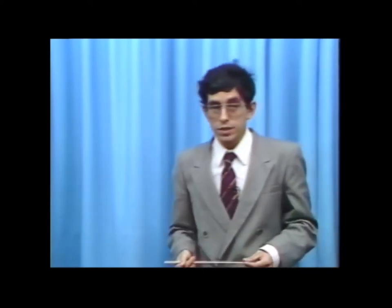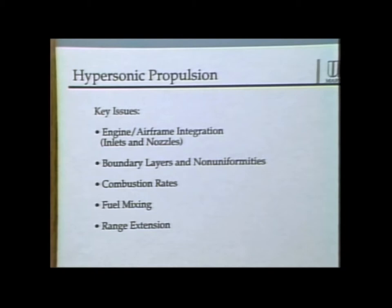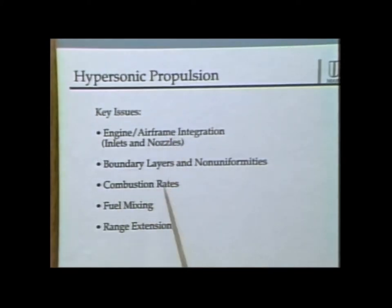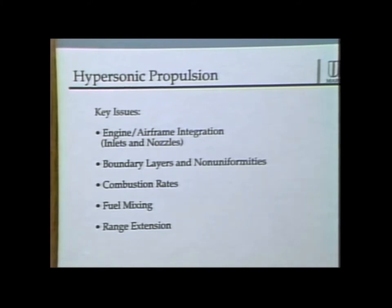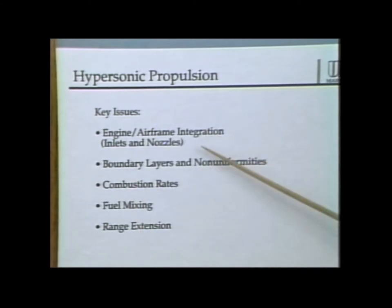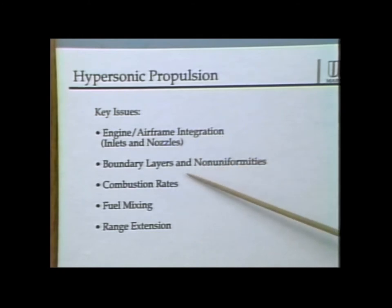Let me list the key issues. This is not intended to be all-inclusive, but a means of sensitizing you to topics we'll discuss today. One key issue is engine-airframe integration: parts of the forebody and aft body are also operating as parts of the engine. That's not only a technology nightmare — it's also a management nightmare, because this vehicle must be designed as a completely integrated concept from start to finish. Another issue is boundary layers and non-uniformities, since the forebody boundary layer will affect engine operation.